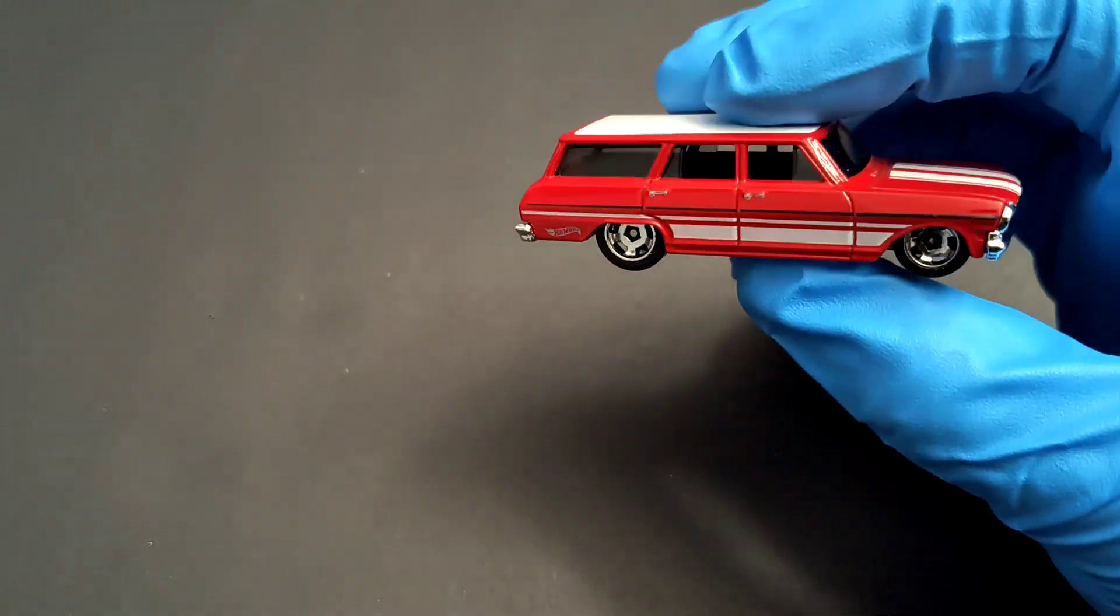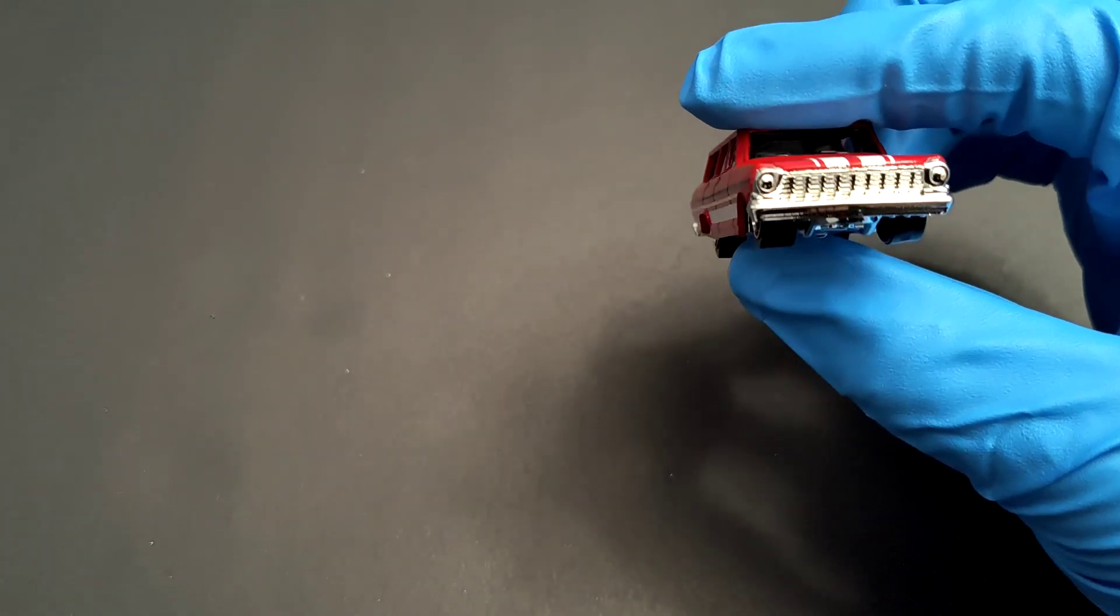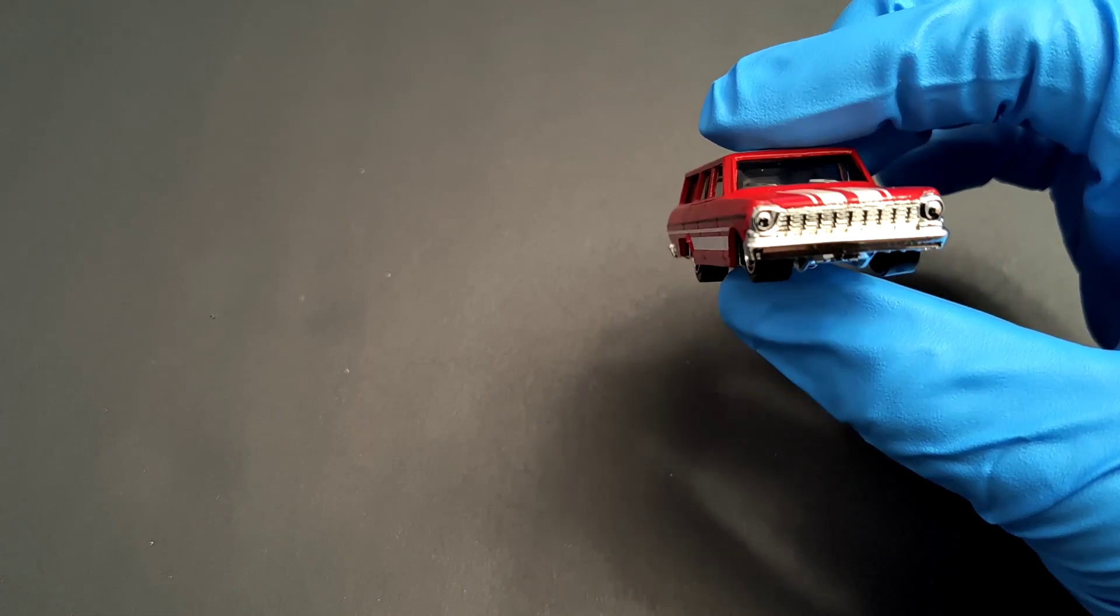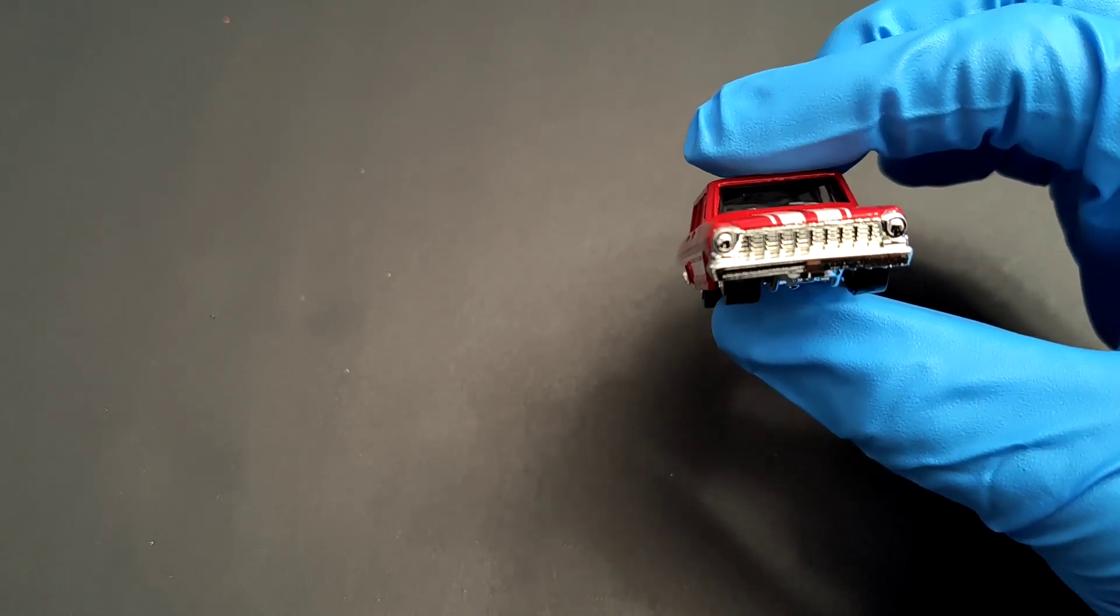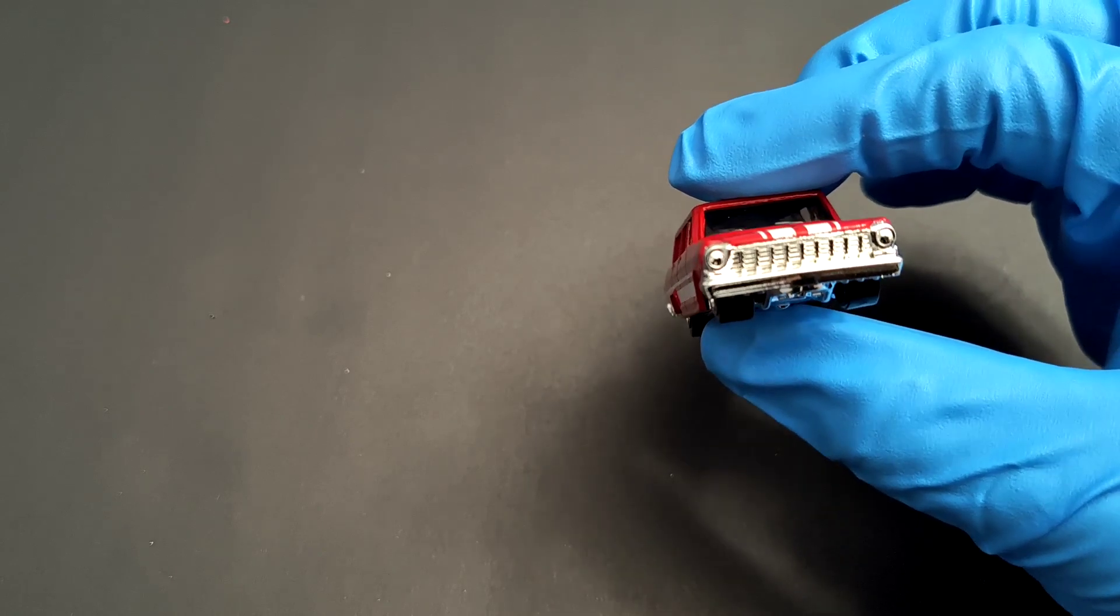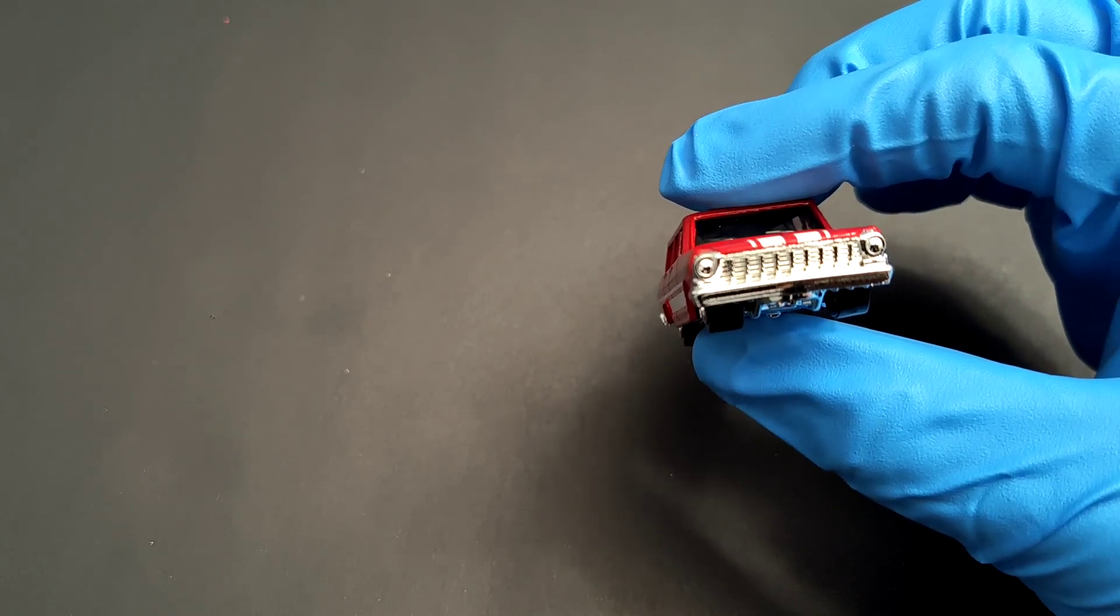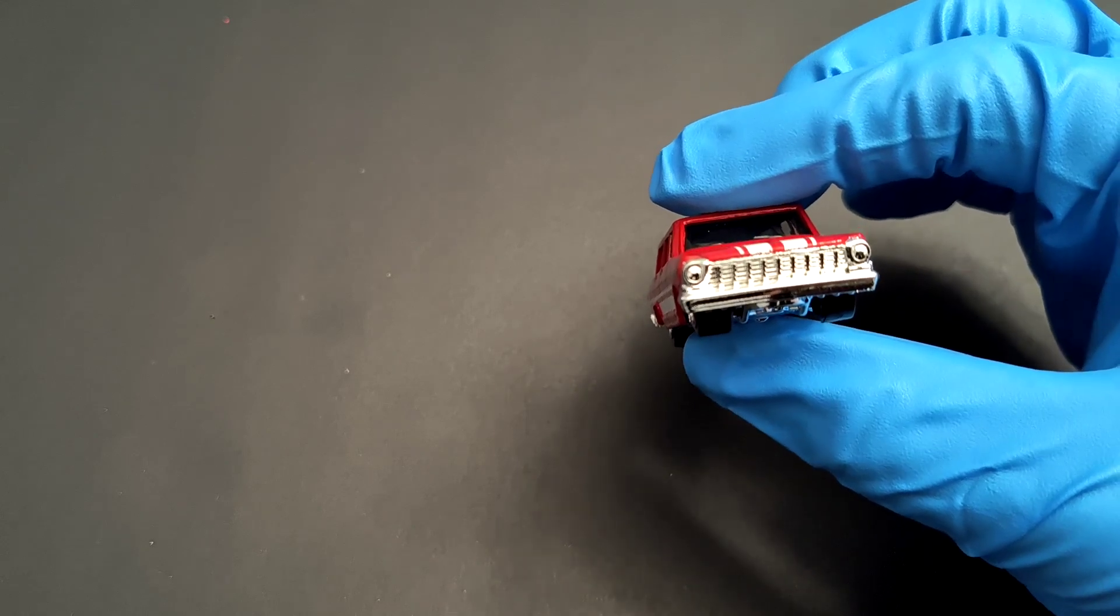Let's start from the front. Up front you got all chrome, so chrome grill, headlamps, again no major details added there. I don't know how you can add details on the chrome, maybe black out the grill I guess, but yeah something.